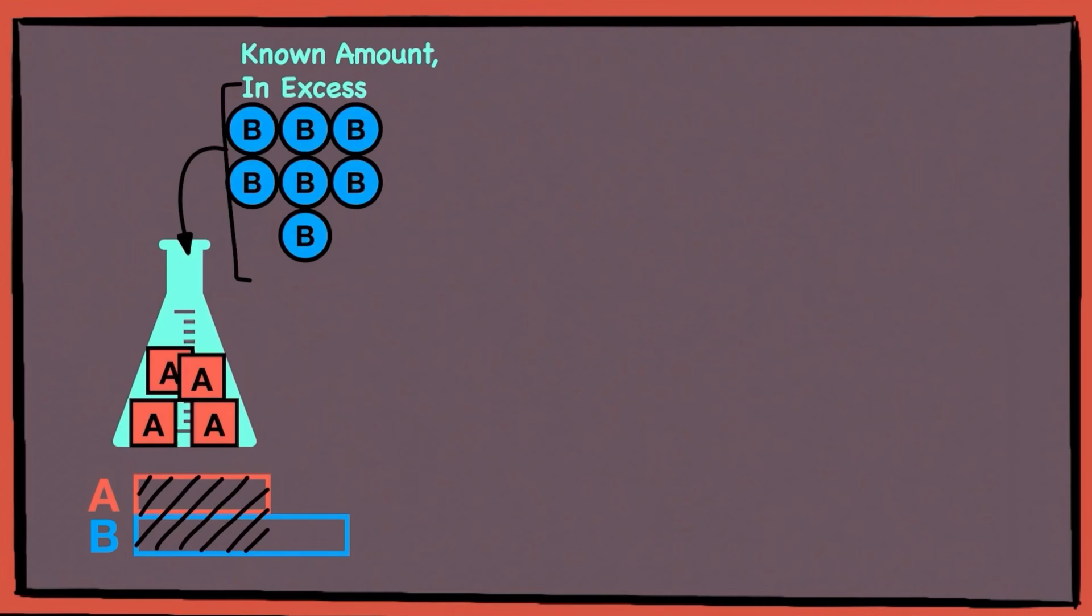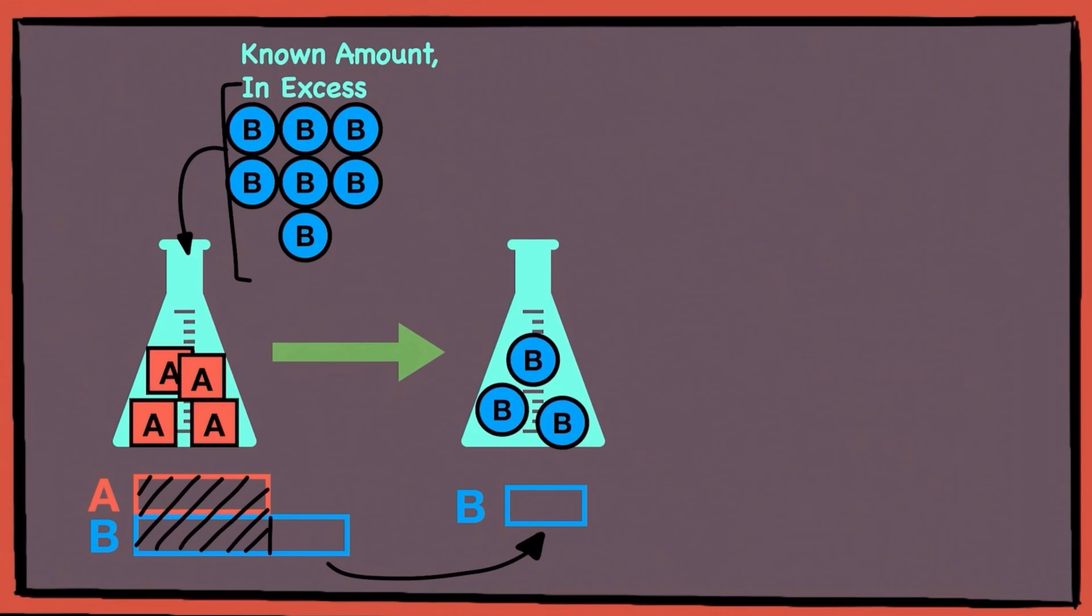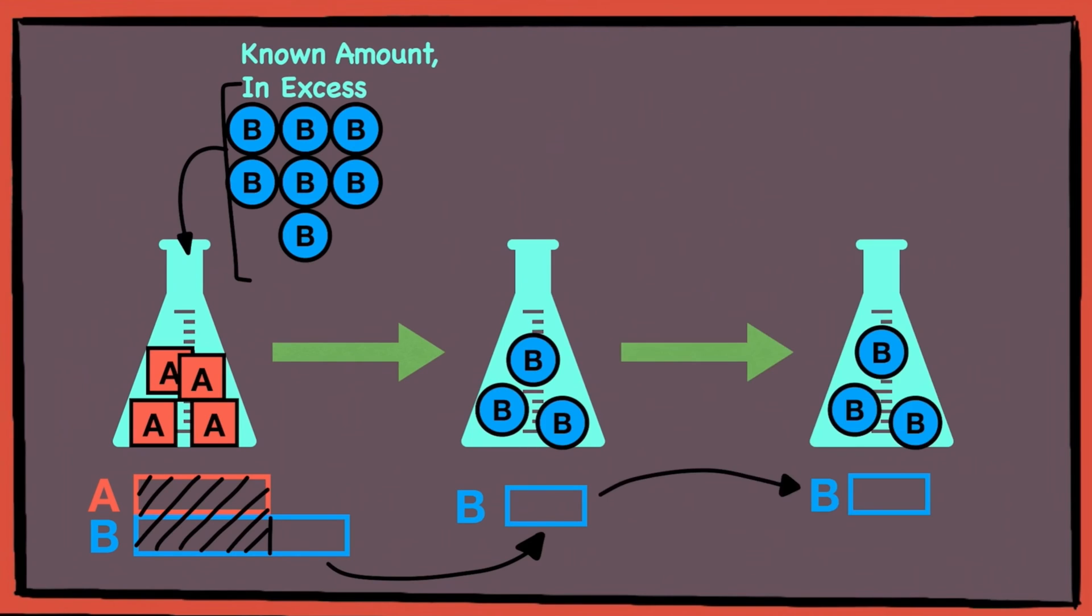So this means that A will be completely reacted away and there'll be no more A left, hence leaving the remaining excess unreacted B. Then what happens is that this excess unreacted B will be titrated against the titrant, which we call T. So you will eventually know what is the amount reacted for both B and T.